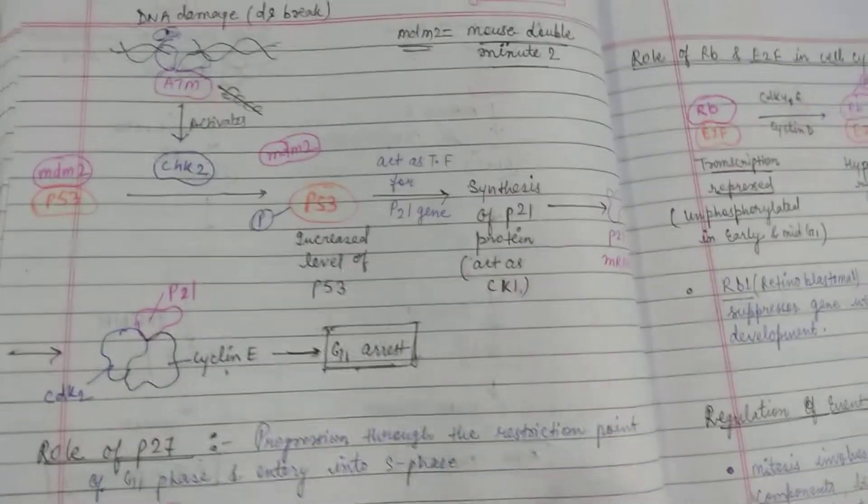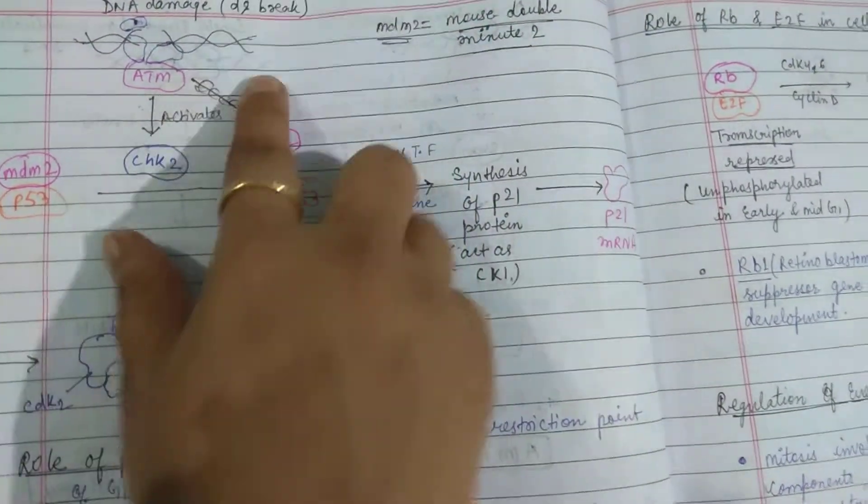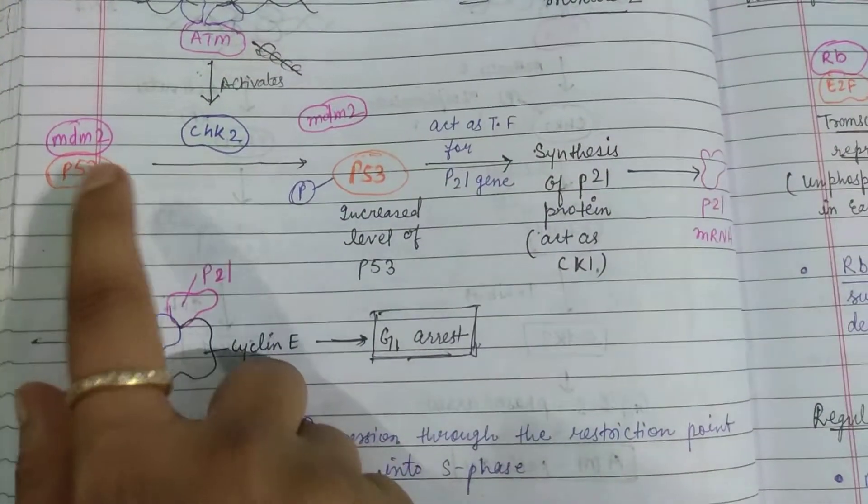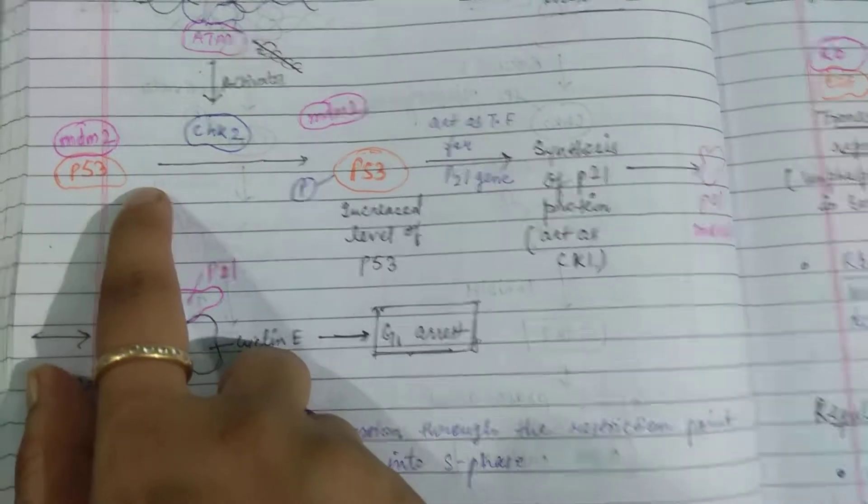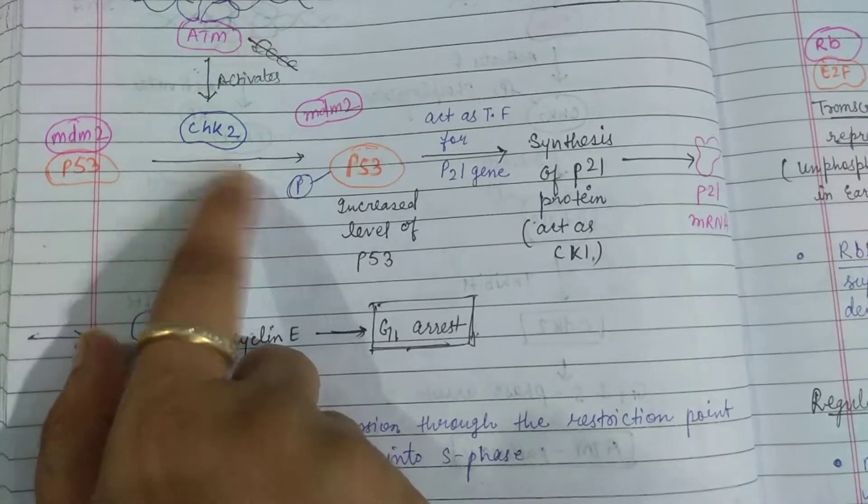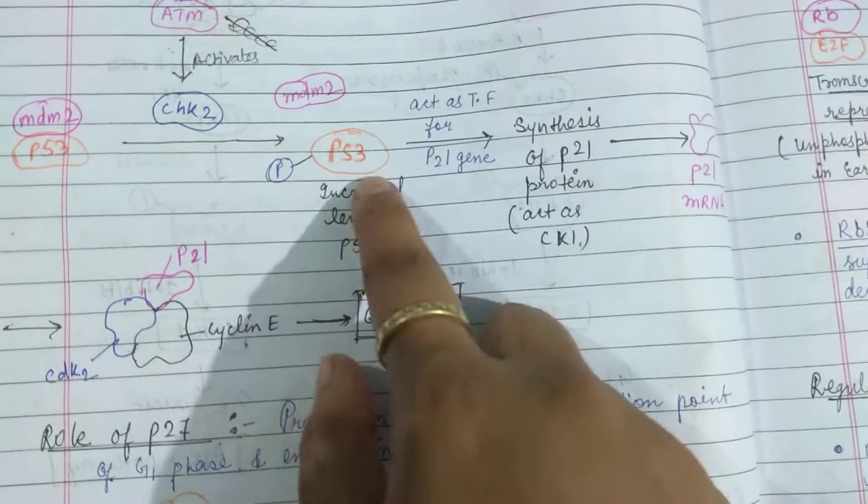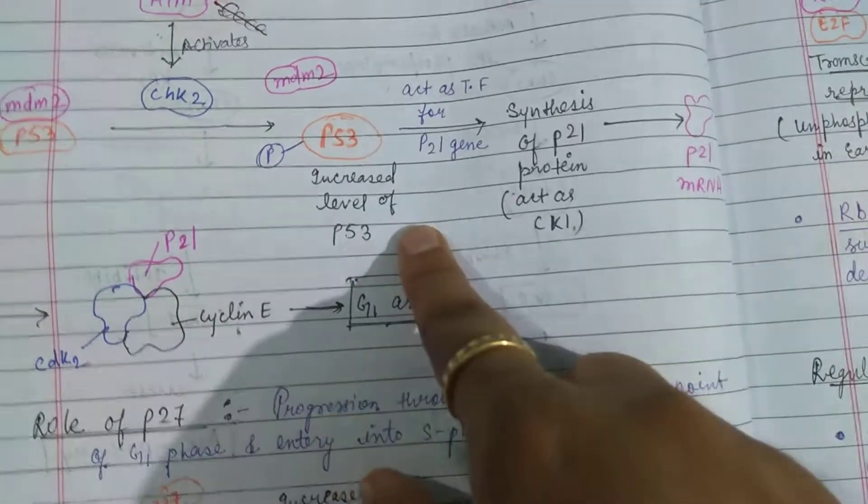Here we see the figure. We discussed earlier that we have a double strand break, so ATM is responsible which activates CHK2. MDM and P53 bind each other. Then CHK2 breaks both of these and MDM2 is broken. P53 gets phosphorylated. When the level of P53 is increased,